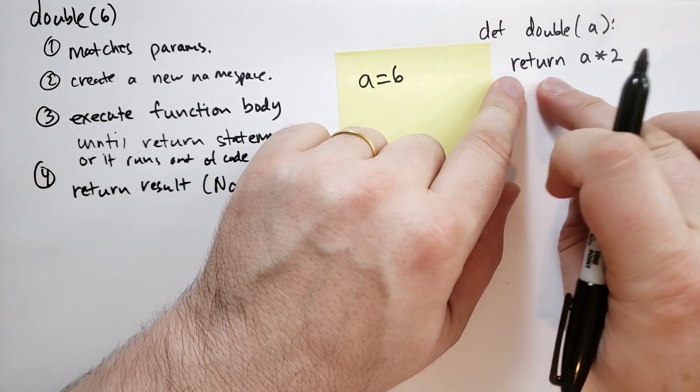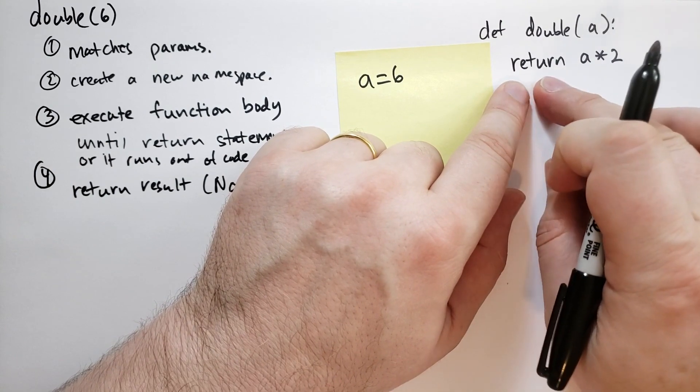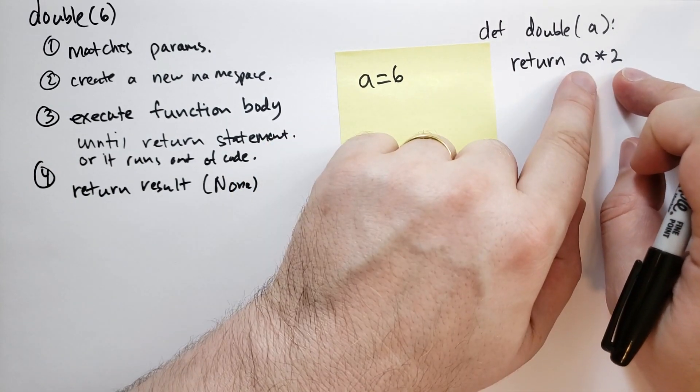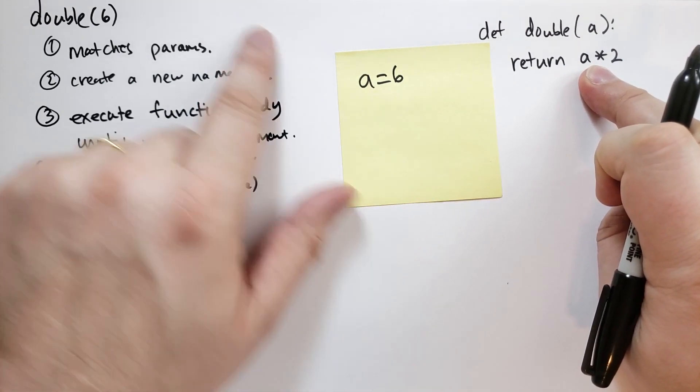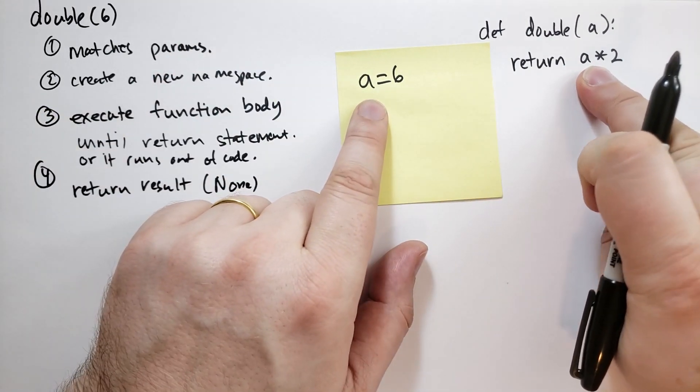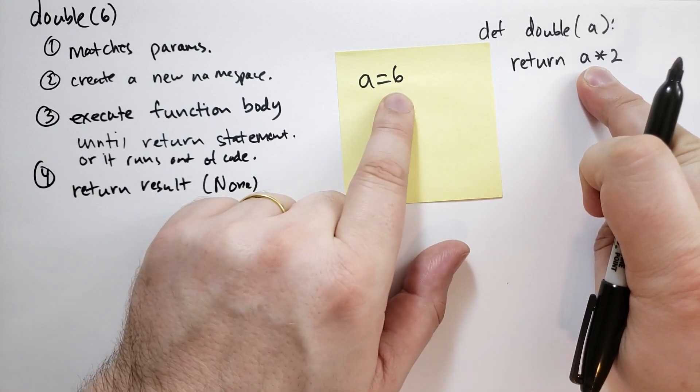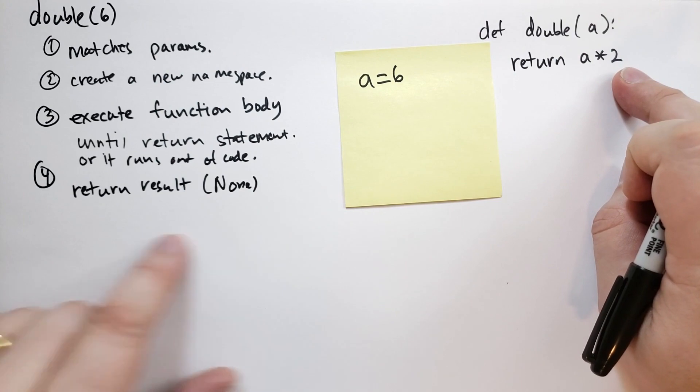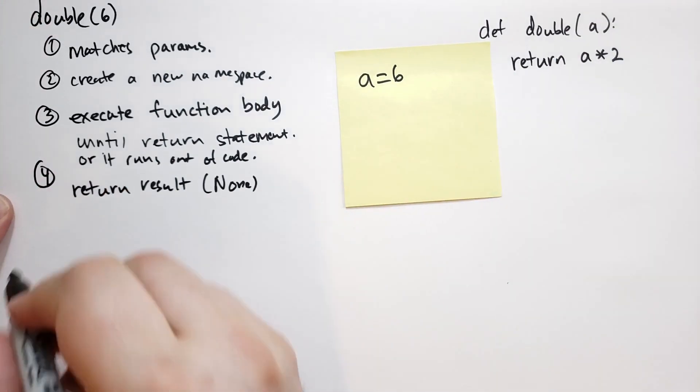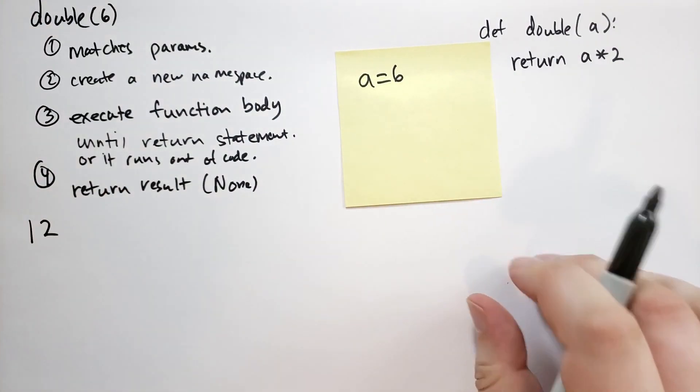So let's look at that expression. So it says, look up A. So we go over here to our local scope, not the global scope, but the local scope first. We see that there is an A. We see that its value is 6. So we say that's 6 times 2 is 12. And so it's going to return 12. And so the double 6 at the end is going to evaluate to 12.